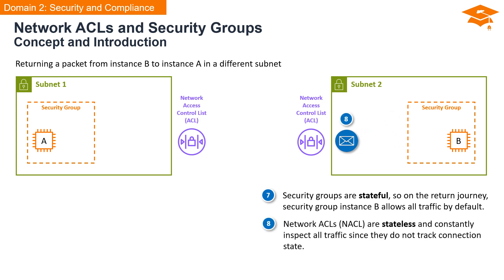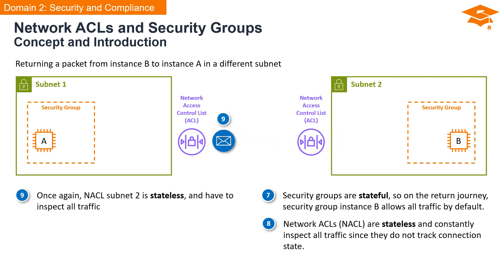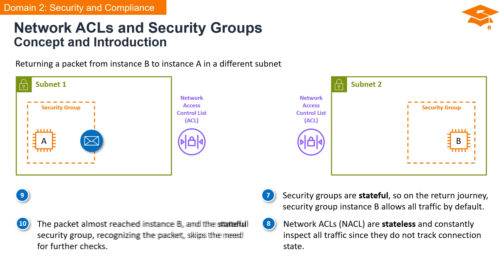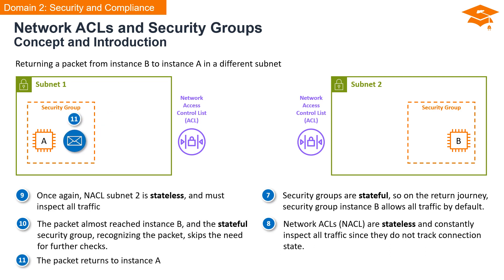In contrast, network access control lists are stateless. They don't take note of the previous inbound and outbound packet — they constantly inspect all inbound and outbound traffic since they don't keep track of connection states. Network access control lists for subnet 2 are stateless and inspect all traffic that comes their way. The packet is almost at instance B, but the stateful security group recognizes it and skips the need for further checks. The packet returns to instance A.